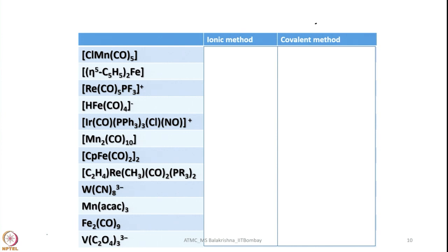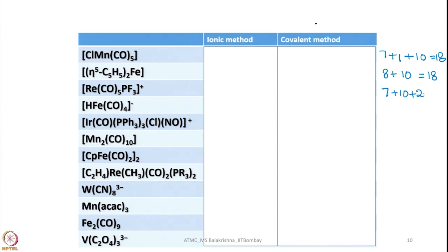Starting with the covalent method: manganese has 7 electrons, chlorine gives 1 electron, and the five carbonyls give 10 electrons — so that gives 18 electrons. For ferrocene, we have 8 electrons from iron and 10 from the two Cp rings, giving 18 electrons. For rhenium, which is in the same group as manganese: 7 electrons from Re, 10 from CO, and PF3 gives 2 electrons, but there is a +1 charge so we subtract 1, giving 18 electrons.